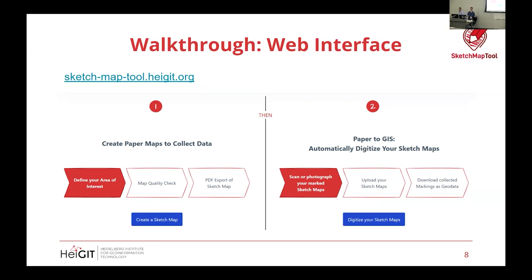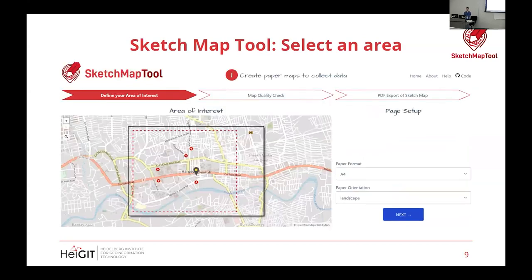Charlie will now walk you through the tool. Imagine you're starting a project — first you'd go to sketch-map-tool.heigit.org. The first thing you'll see are two options: on the left, 'Create a Sketch Map,' and on the right, 'Digitize the Sketch Maps' — that's the second step after you've done your annotation. You start on the left. Here we're looking at Hargeisa from a project in Somaliland, with a paper format of A4 and landscape orientation — these choices determine what you'll do in your project.